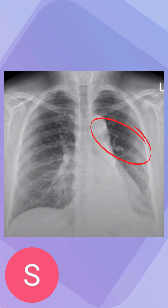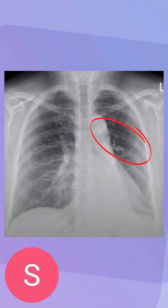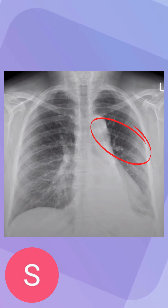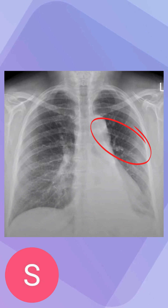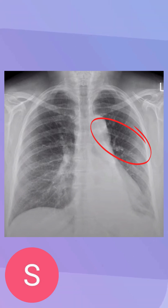So first thing we have to do is orient ourselves — the red circle is on the left side of the patient. What we can see here is a really healthy right lung. We can see it's extended, there's branches inside of it, it's aired up. Nothing looks wrong with the right lung. You can also see the hip bone — everything looks intact.